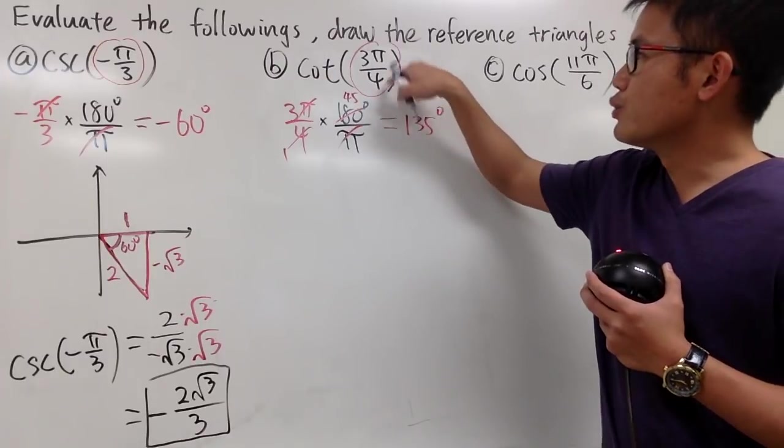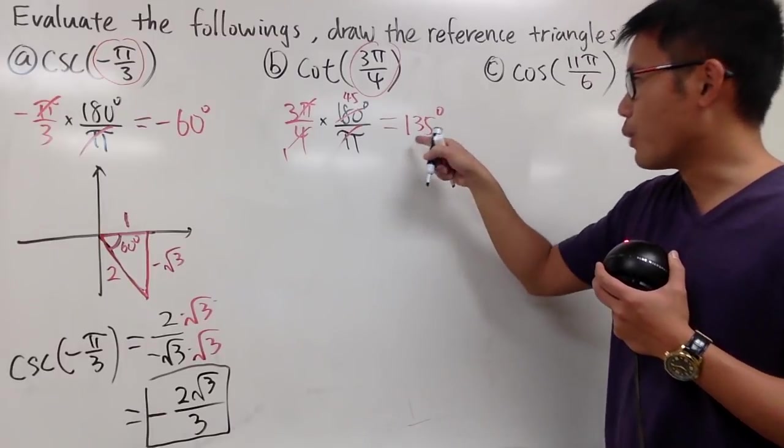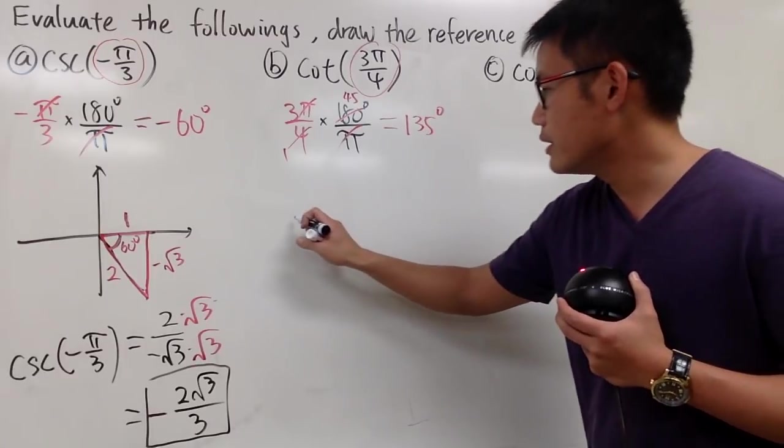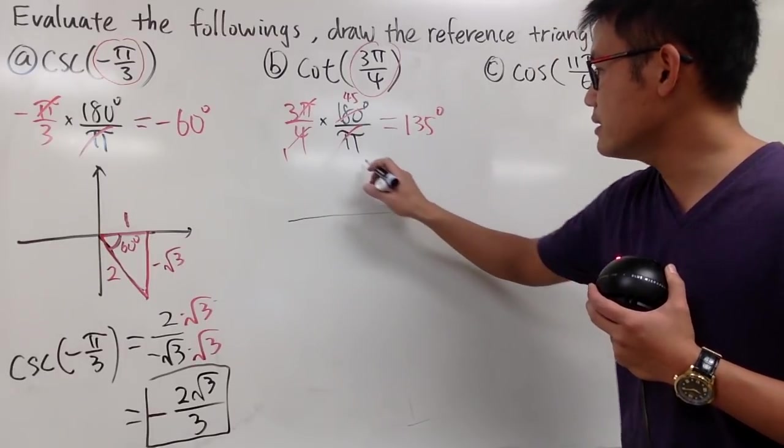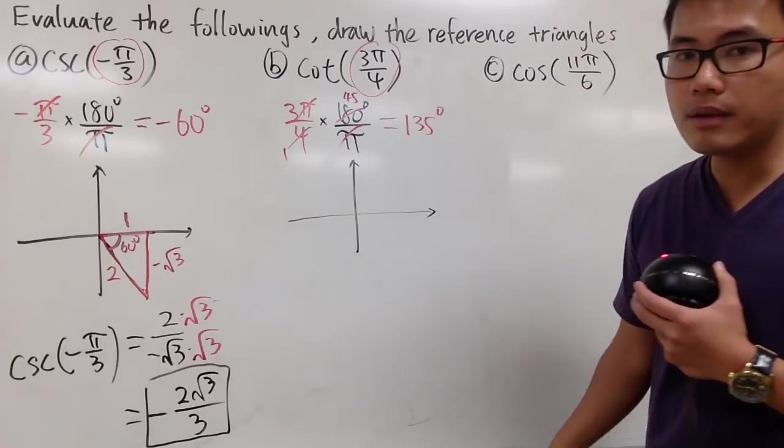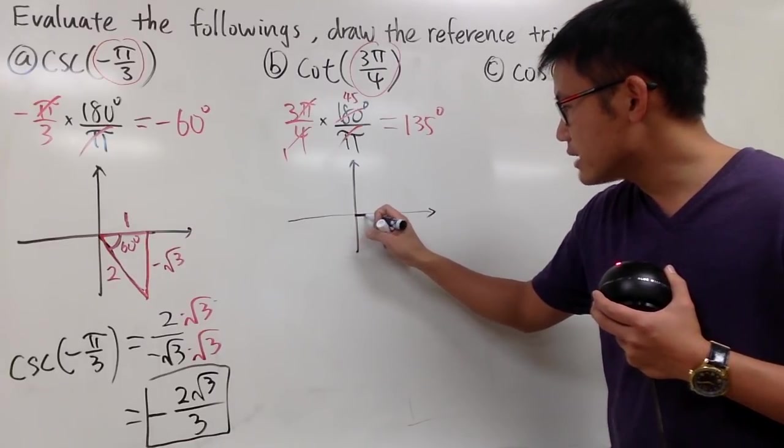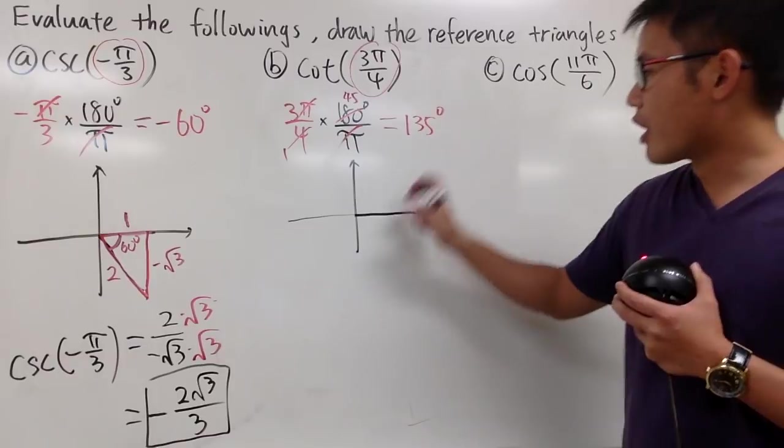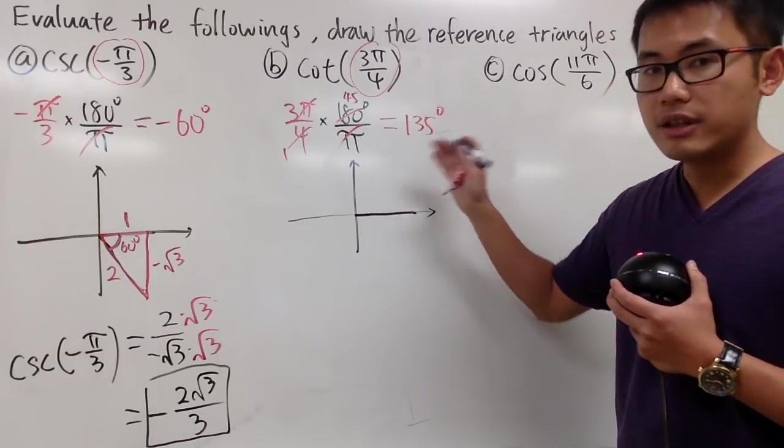To draw a picture based on this, it's the same as drawing a picture for 135 degrees. Here is the picture. We have the x-axis and the y-axis. Starting from the positive x-axis right here, turn 135 degrees.